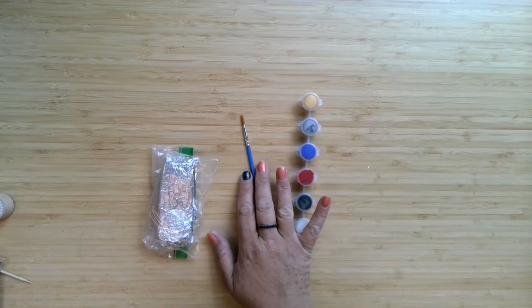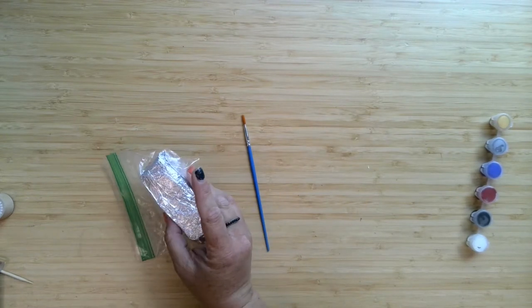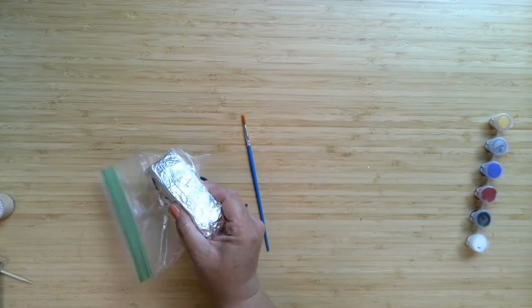You'll get a medium round brush, and then wrapped in foil, you are getting a portion of white Sculpey air dry clay.